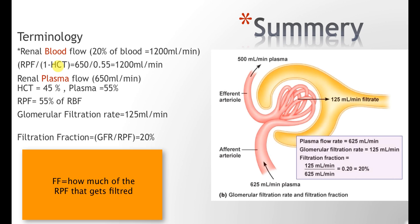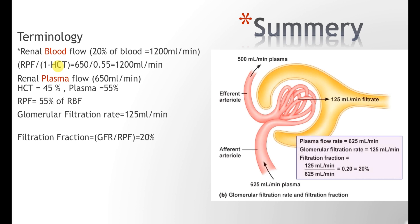The last item is the filtration fraction. To get it, you take the GFR and divide by the renal plasma flow, which usually comes to approximately 20%. The next video will continue with tubular reabsorption and secretion, so hope to see you there.